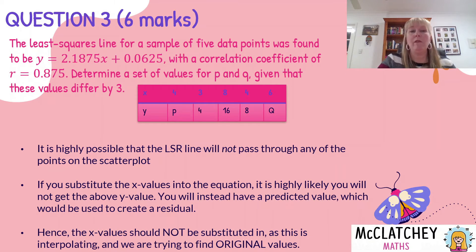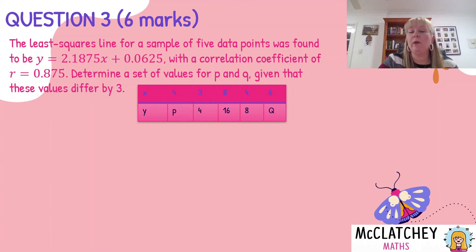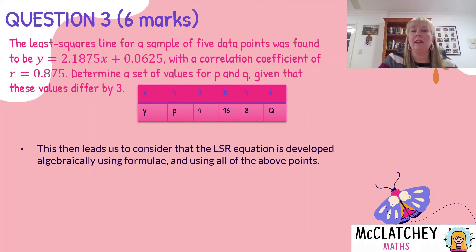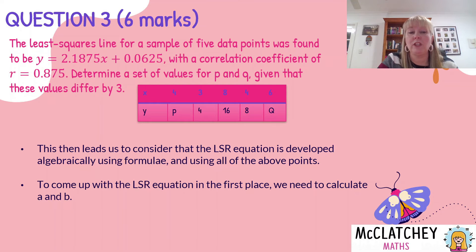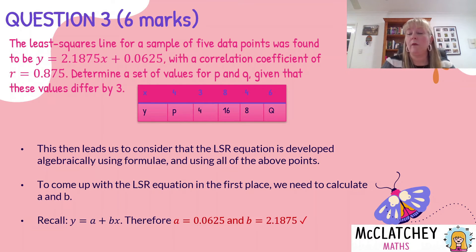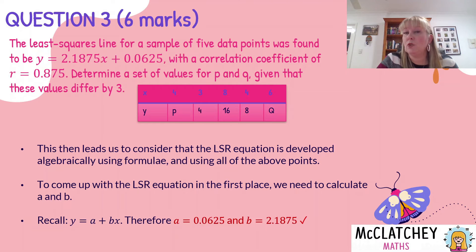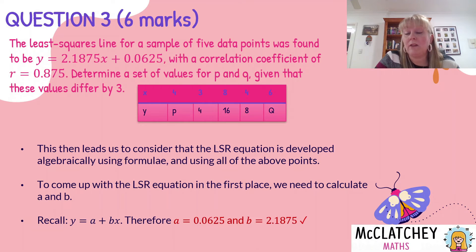So how do we do that? Firstly, recognize that y = 2.1875x + 0.0625 is derived algebraically using formulas from all the points. Our line is in the form y = a + bx. Using our knowledge of what a and b represent, we know a = 0.0625 and b = 2.1875. That was worth one of the six marks, and probably only about 50% of students got that step. If in doubt, write down formulas — that would have earned you a mark.